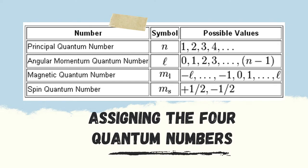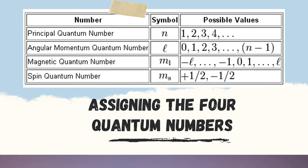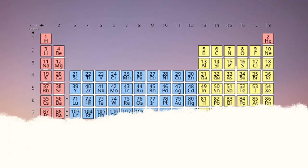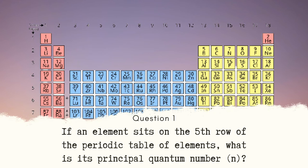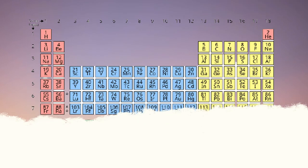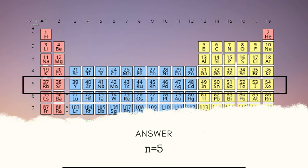Let us have an example on how to assign the four quantum numbers for an electron. Question number 1. If an element sits on the fifth row of the periodic table of elements, what is its principal quantum number or N? The answer is N is equal to 5. Since the energy level of atoms correspond to the rows of periodic table of the elements, elements on row 5 have 5 shells the electron occupies.